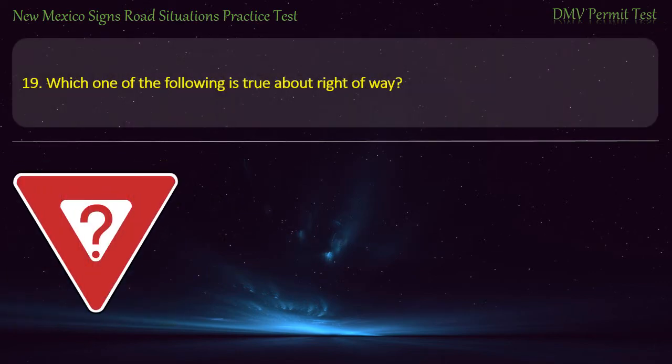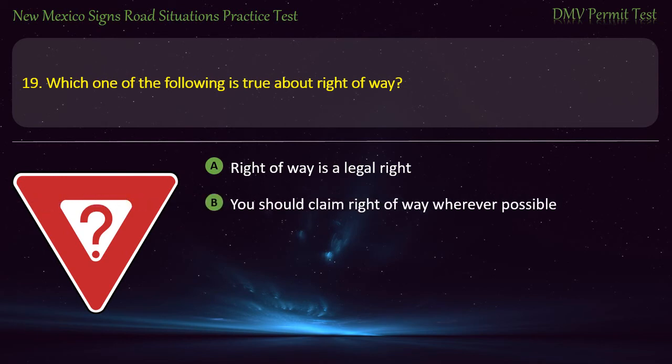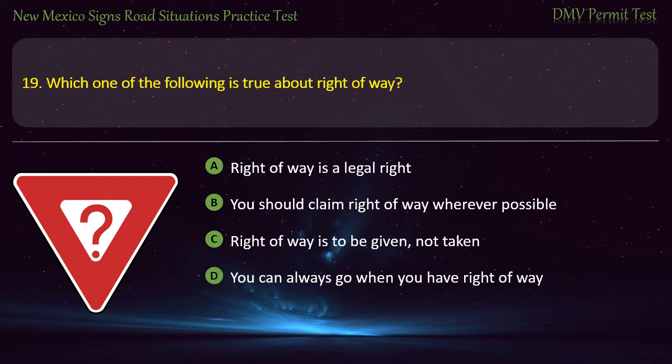Question 19. Which one of the following is true about right-of-way? Options: Right-of-way is a legal right; you should claim right-of-way wherever possible; right-of-way is to be given, not taken; or you can always go when you have right-of-way. Answer: Right-of-way is to be given, not taken.